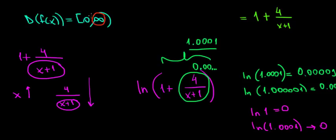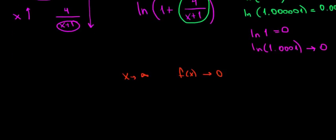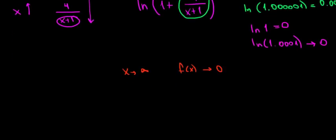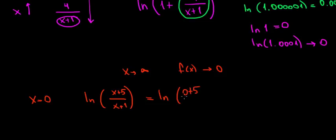But what happens when x actually takes the value of 0? Let's plug it over here. When x equals to 0, our function will have the form of 0 plus 5 divided by 0 plus 1. So that's ln of 5. So the value of the function when x equals to 0 is equal to ln of 5.